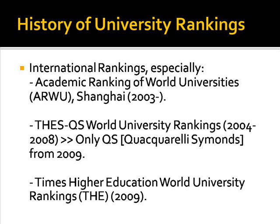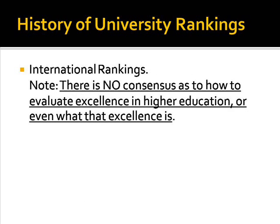These are the main contenders in international ranking, but there are at least twelve more. These various ranking systems vary considerably in their methodologies and results, indicating quite clearly that there is no consensus as to how to evaluate excellence in higher education, or even what that excellence is. The popularity of these rankings indicates the tremendous desire on the parts of many governments and universities for some scale of comparison, by which they can evaluate the benefits of higher education, seek improvements to make universities more cost-effective, and engage in comparisons with perceived rivals.